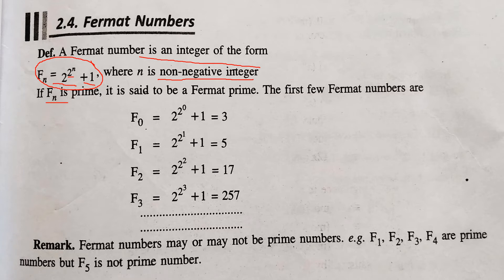If this fn is a prime, it is said to be a Fermat Prime. So, if we put value of n is equal to 0, we get 2 raised to power 2 raised to 0 plus 1. It is 3. It is the first Fermat Prime, f0.